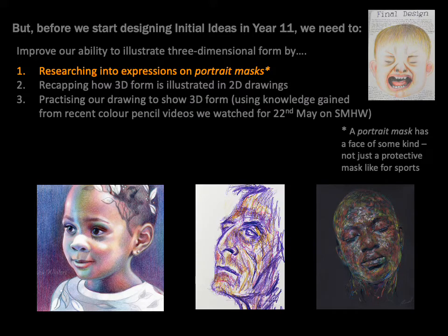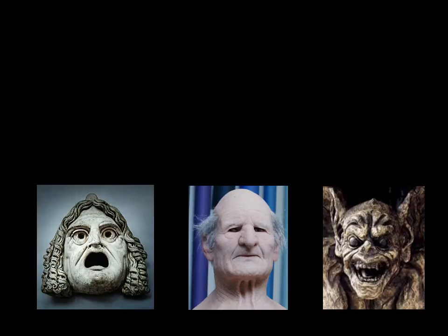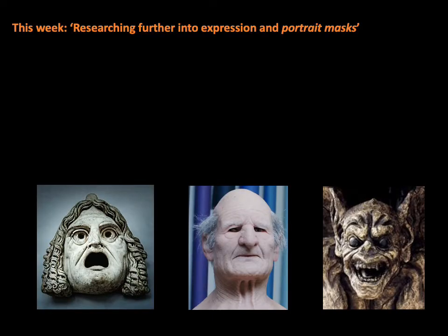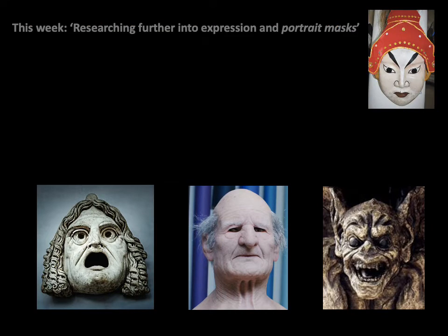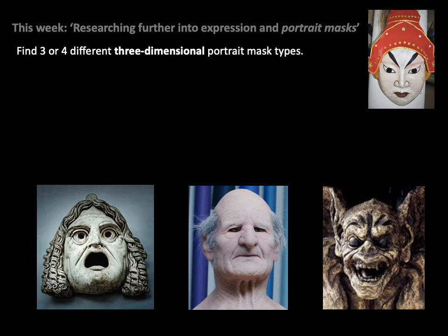There are some more ideas of using colour pencil to express form. So this week, the task is to research further into expression and portrait masks. I've given you four examples straight away. The one on the right at the top is from Vietnam — some sort of ceremonial mask. Then there are a couple of gargoyles, bottom left and bottom right. The one in the middle is a latex mould used in film or theatre to make someone look very different. What I want you to do is find three or four different three-dimensional portrait mask types. I say three-dimensional because I don't want flat pictures — so manga won't do here, it needs to be something 3D.